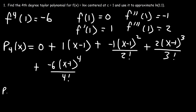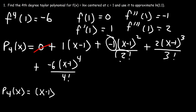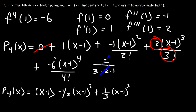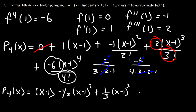Now let's simplify. The zero drops out. The first term is just (x - 1). Then -1/2 gives us -(1/2)(x - 1)². For 2/3!, since 3! = 6 and we cancel a 2, we get (1/3)(x - 1)³. And -6/4!: since 4! = 24 and 6 cancels with 3×2, we get -(1/4)(x - 1)⁴.